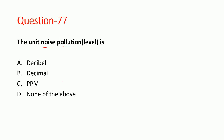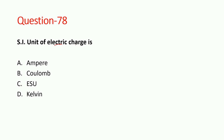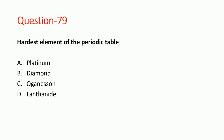The unit of noise pollution is decibel. Option A is correct. The SI unit of electric charge is Coulomb. Option B is correct. The hardest element in the periodic table is diamond. Platinum is not correct. Diamond is the hardest, and we can say the purest form of carbon — if carbon is in its purest form, it is the hardest element. So the hardest element is carbon. Option is correct.